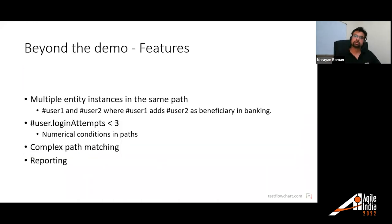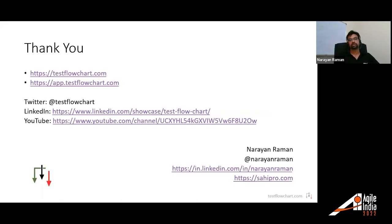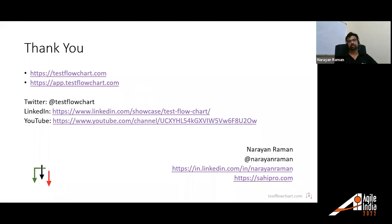Beyond the demo: if you want multiple users, concepts like #user1 and #user2 exist — it creates multiple instances of the entity. Numerical conditions like 'login attempts less than 3' are supported. Complex path matching works across multiple flowcharts in a project. Reporting is coming soon. Thank you very much — this was our presentation. You can find more information at testflowcharts.com, which has a free version available to sign up and start using immediately. Thank you very much for the opportunity.